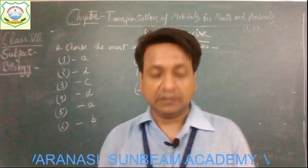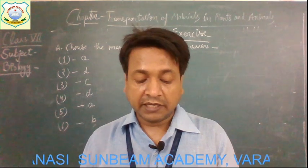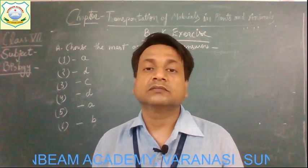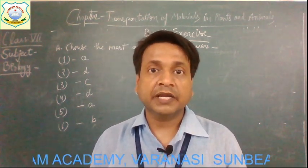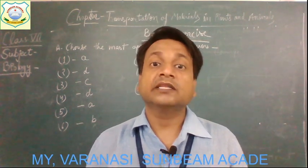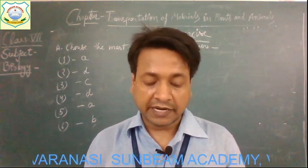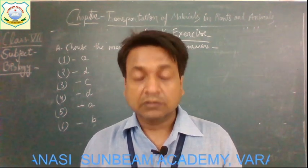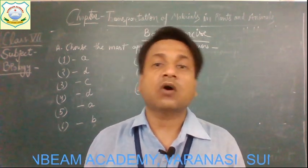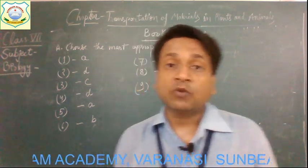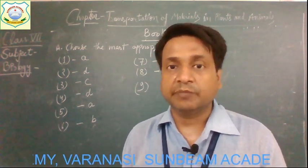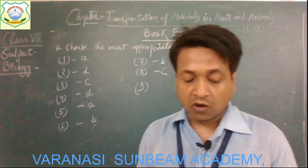Question number nine: In the human urinary system, which is the most important organ? Options are kidneys, ureters, urinary bladder, and urethra. The important organ is the kidney because it filters the blood and removes waste material in the form of urine. Option A is correct.